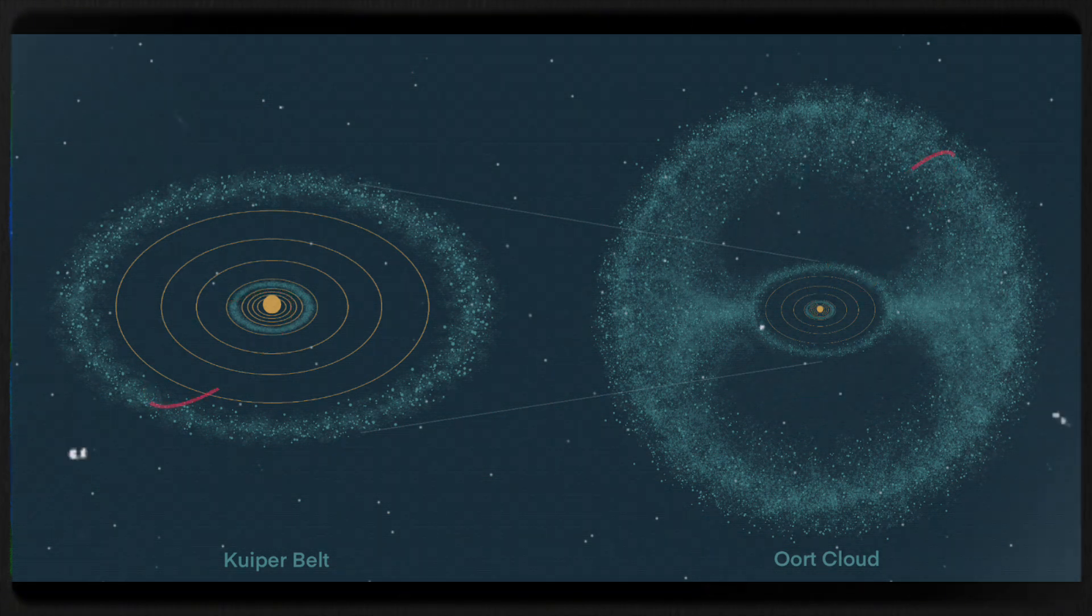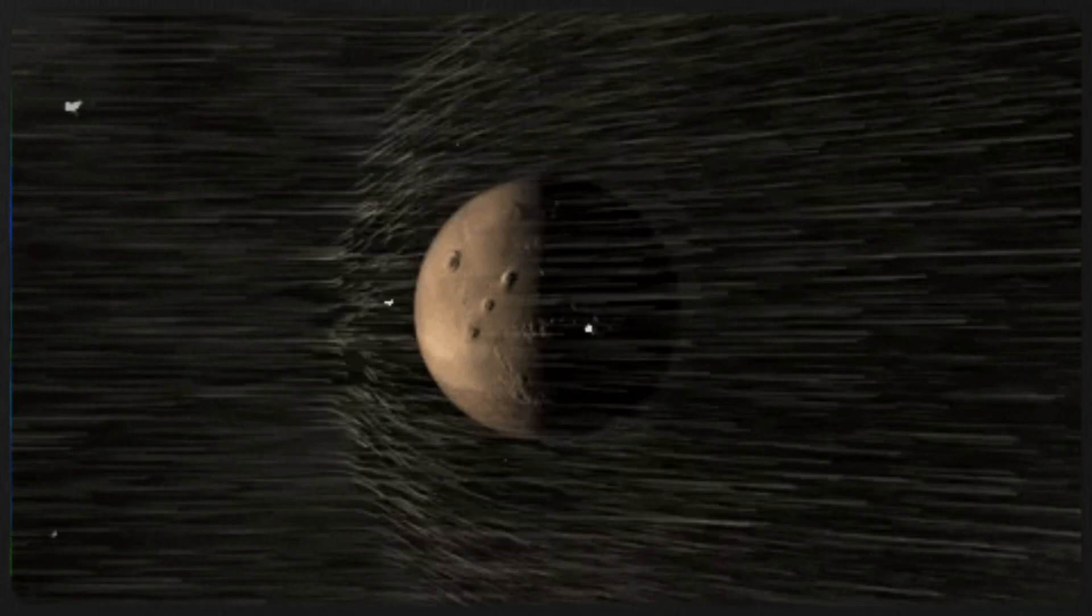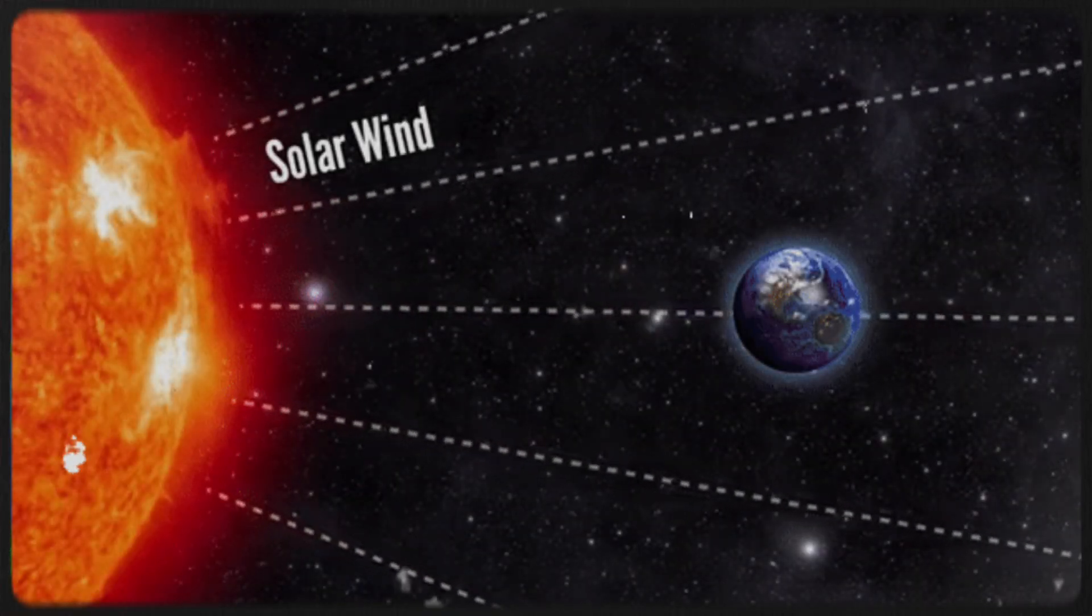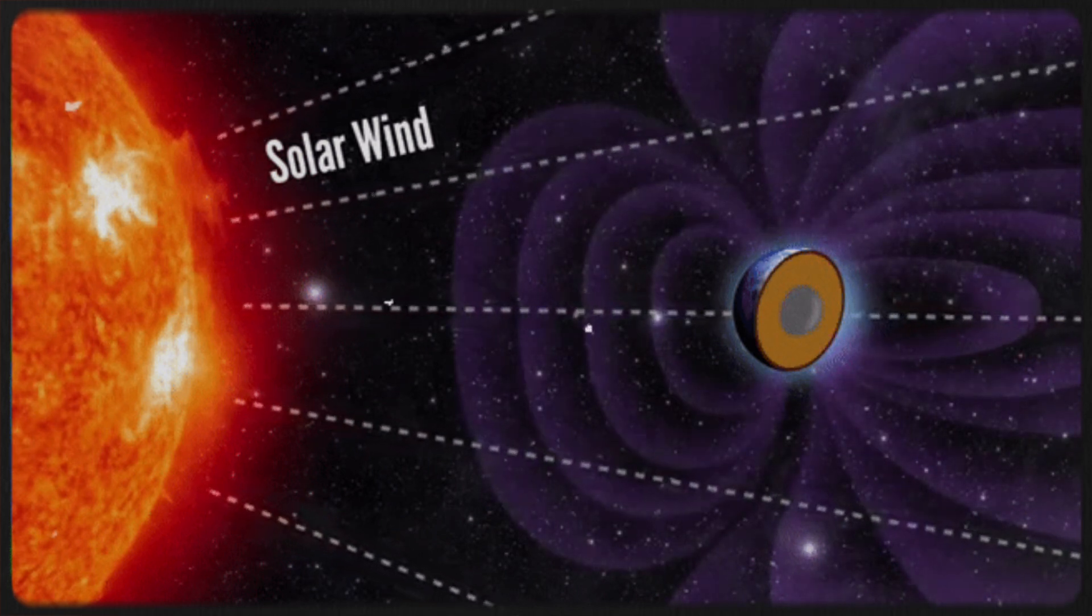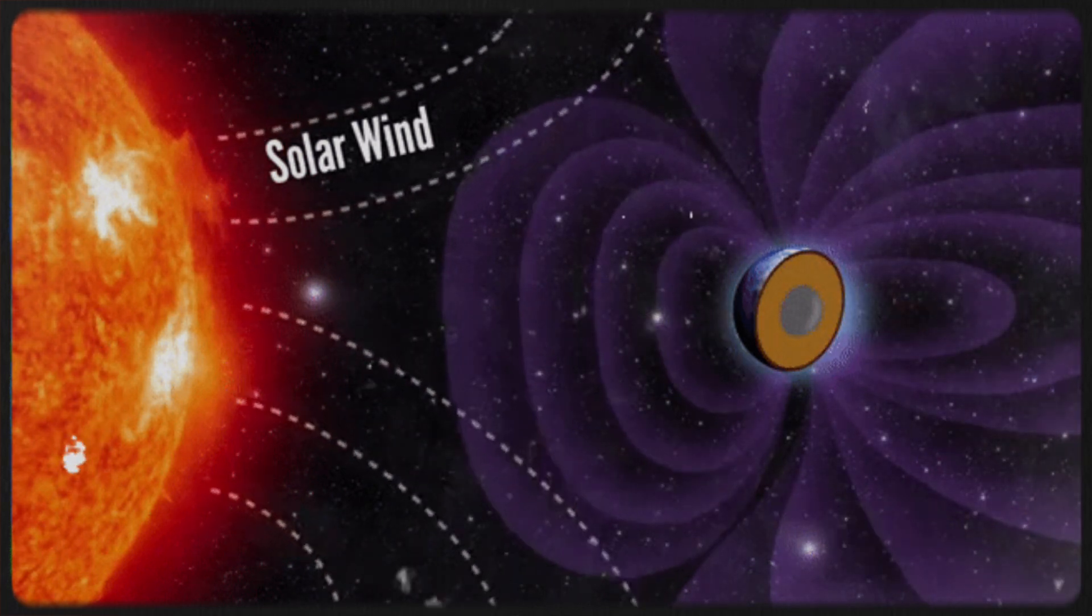However, interstellar space is much closer. It begins where the influence of the solar wind ends. The solar wind is a continuous stream of charged particles and magnetic fields emitted by the Sun, expanding outward like an inflating balloon to form the heliosphere.